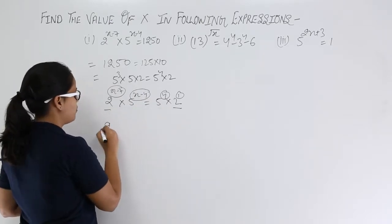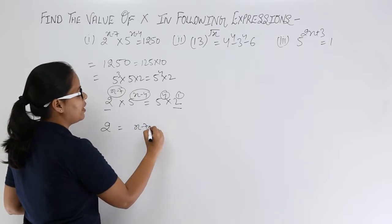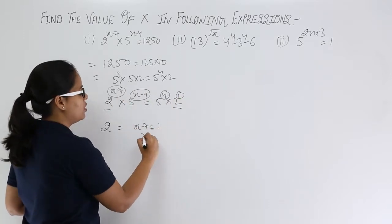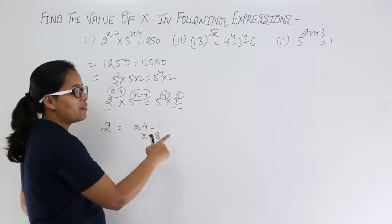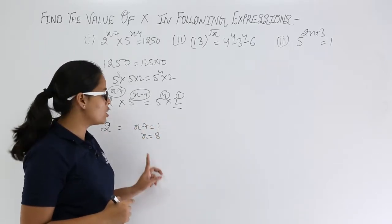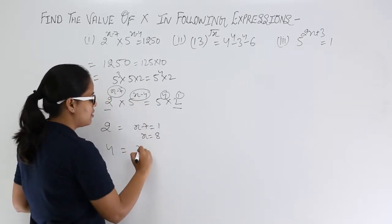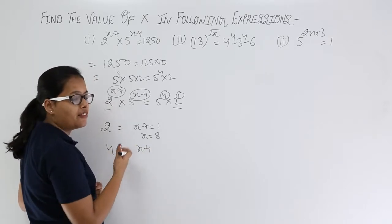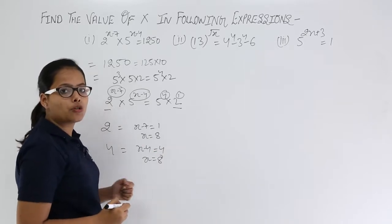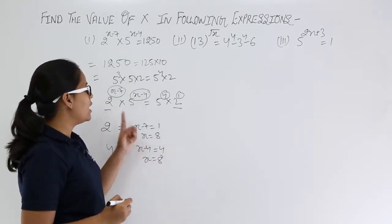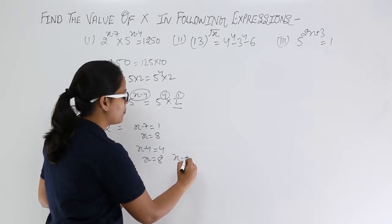In case of base 2, the powers give x − 7 = 1, so x = 8, because −7 moves to the other side to become +7, giving 7 + 1 = 8. In case of base 5, the power is x − 4 on the left and 4 on the right, so x − 4 = 4 also gives x = 8. Both conditions are satisfied, so x = 8.